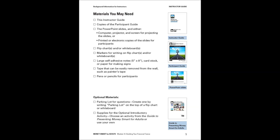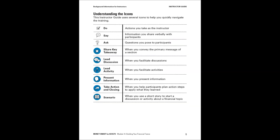Regarding the participant guide, if it's a challenge for you to give copies to everyone in your training, please refer them to the online version or some other appropriate solutions. Optional materials such as the parking lot for questions and supplies for any optional introductory activity should be on hand. The understanding the icon section is the same for all other modules — you can reference it here as a refresher if needed.